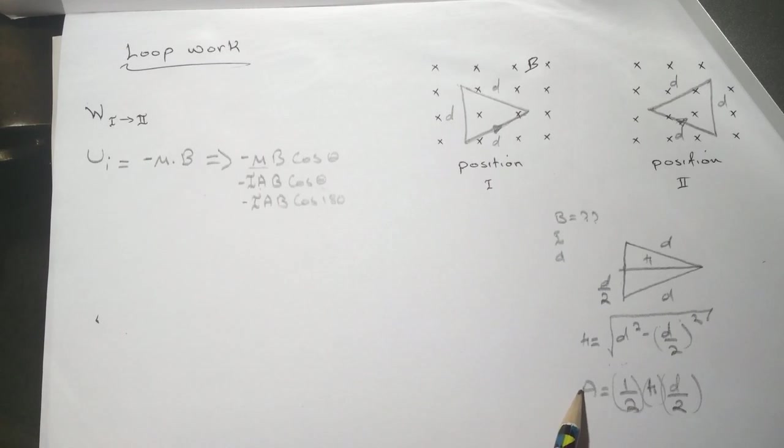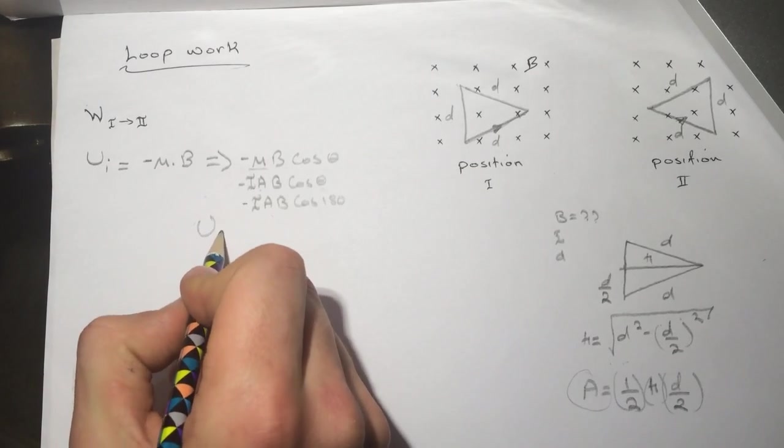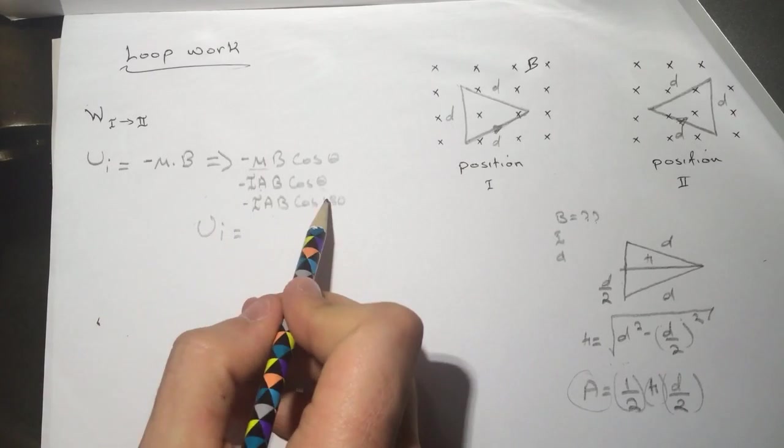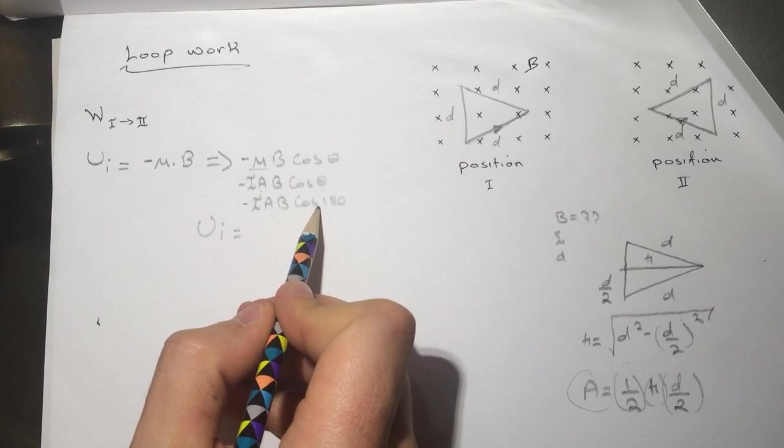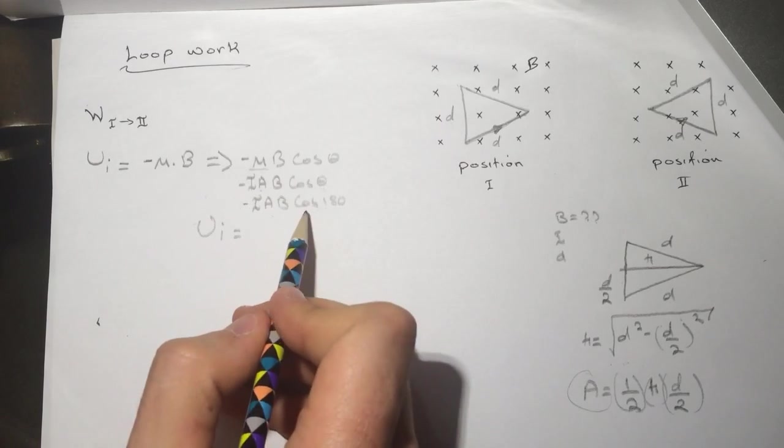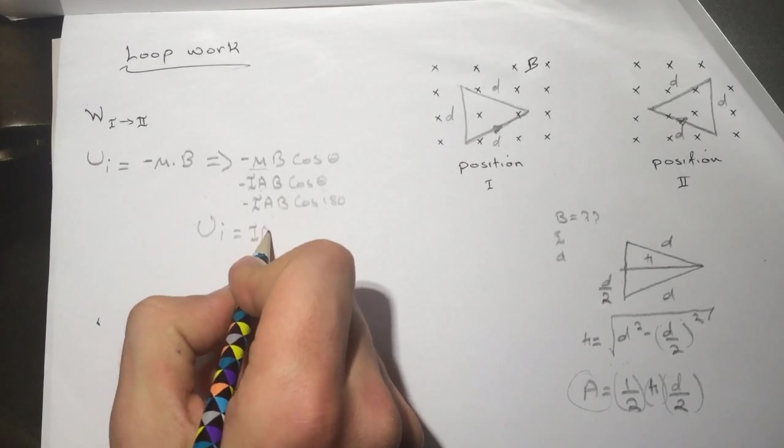Just substitute this here. You'll get U initial will be, since this is going to turn this to a positive, it's IAB.